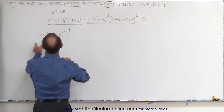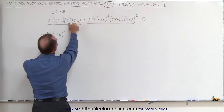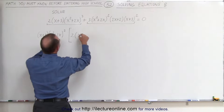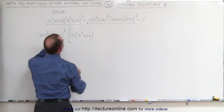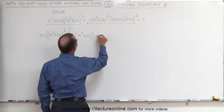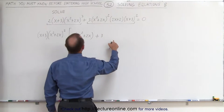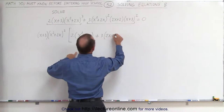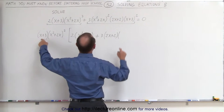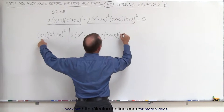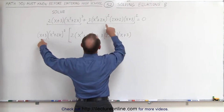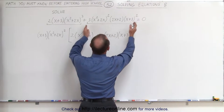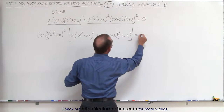Now let's see what we have left. On the left side, the x plus 3 is gone, and two of those are gone — we still have a third one left — so we end up with 2 times x squared plus 2x, plus 3. The 2x plus 2 is not factored out, so that's still there. And we have an x plus 3 left because we only factored out one of them. We factored out an x squared plus 2x quantity squared, so that's left on the second term, and that equals 0.